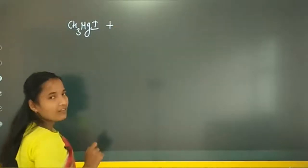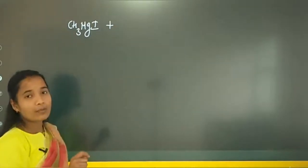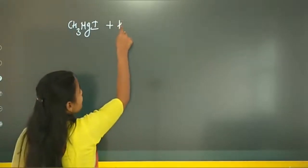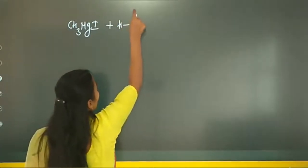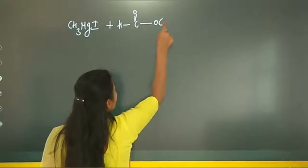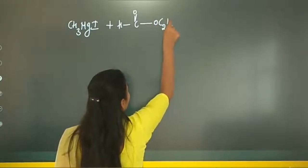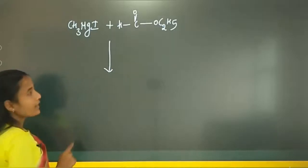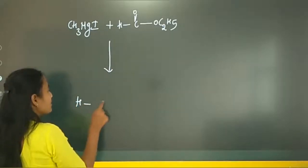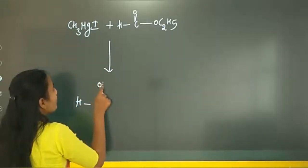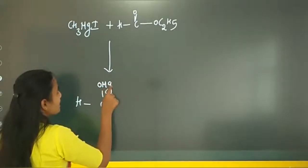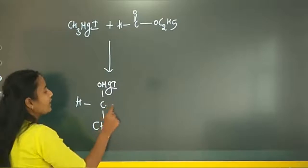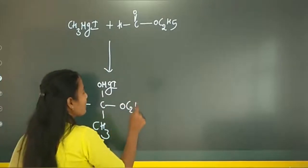Methyl magnesium iodide reacts with ethyl formate. The product formed is HC(-OMgI)(-CH3)-OC2H5 as the addition intermediate. On hydrolysis with H2O and H⁺, this intermediate undergoes further reaction.